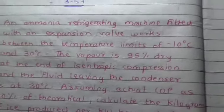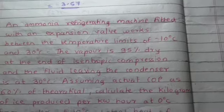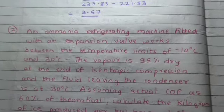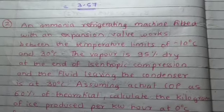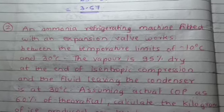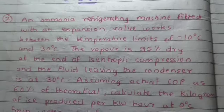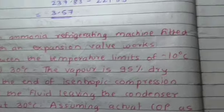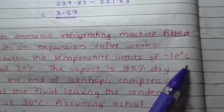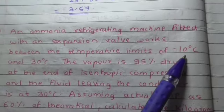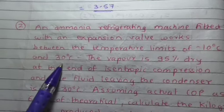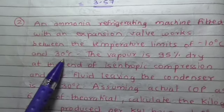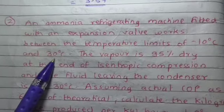First we will understand the meaning of this problem. An ammonia refrigerating machine works between temperature limits of minus 10 degrees Celsius and 30 degrees Celsius. Directly we know that minus 10 degrees Celsius is evaporator temperature, the lowest temperature in the system, and 30 degrees Celsius is the condenser temperature, the highest temperature in the system.